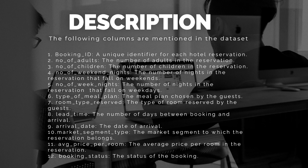Number 6: Type of Meal Plan — the meal plan chosen by the guests. Number 7: Room Type Reserved — the type of room reserved by the guests. Number 8: Lead Time — the number of days between booking and arrival. Number 9: Arrival Date — the date of arrival. Number 10: Market Segment Type — the market segment to which the reservation belongs. Number 11: Average Price Per Room — the average price per room in the reservation. Number 12: Booking Status — the status of the booking.